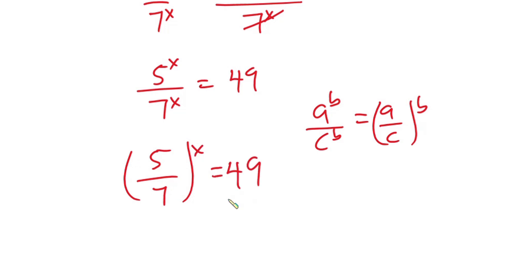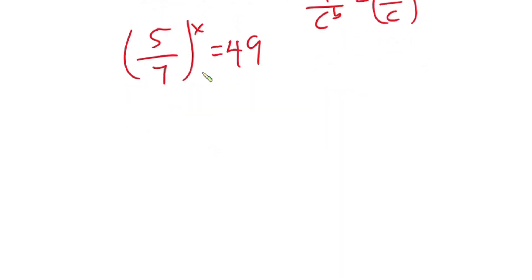Now we want to find the value of x, so let's take log in base 10 on both sides. So we have the log of (5/7)^x equals log of 49.